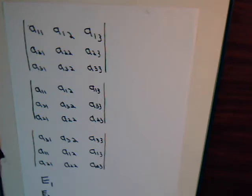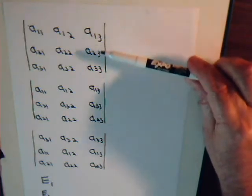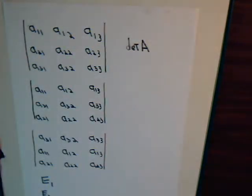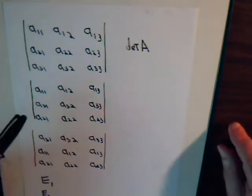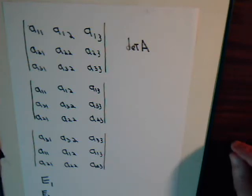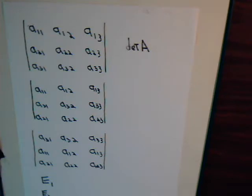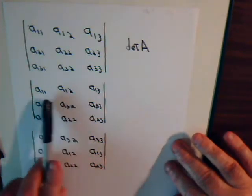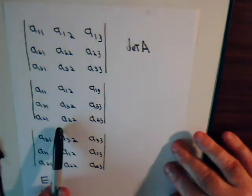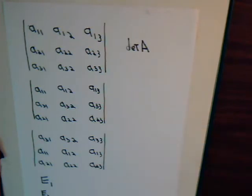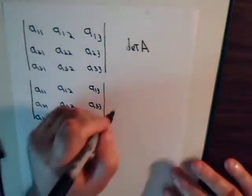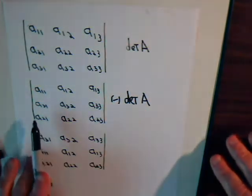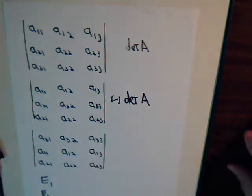Another property of determinants: if we have a matrix A with determinant A, and we exchange any of the rows or columns, it changes the value of the determinant. Here we have A11, A12, A13 as the first row, but the second and third rows are interchanged. If the original determinant has value A, then the new one would be negative that. Or if we switch two columns, that also changes the determinant by a negative sign.